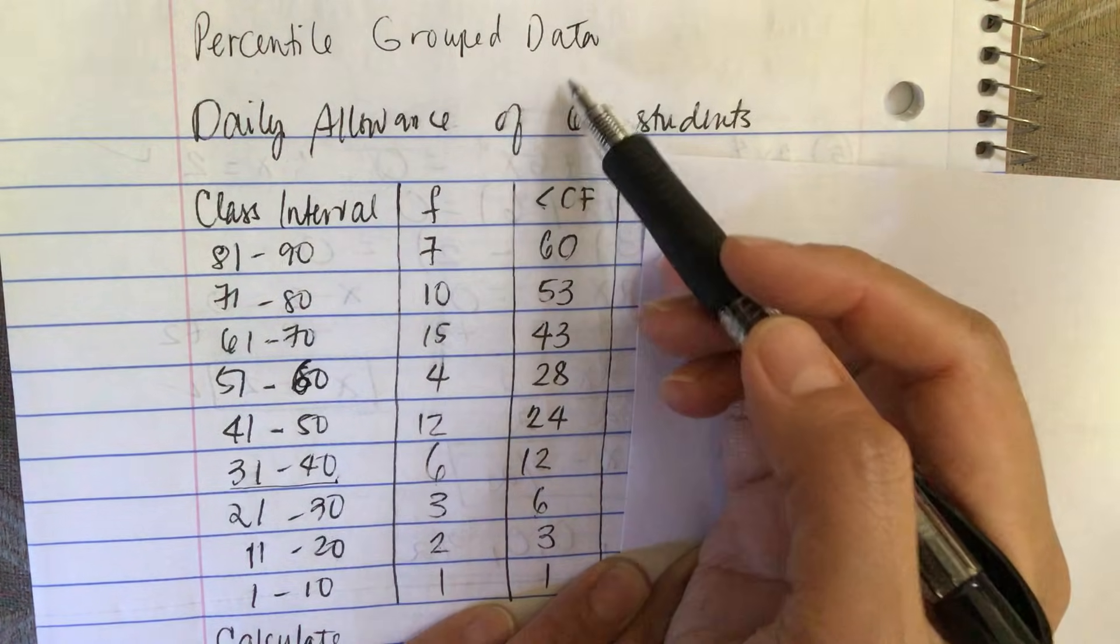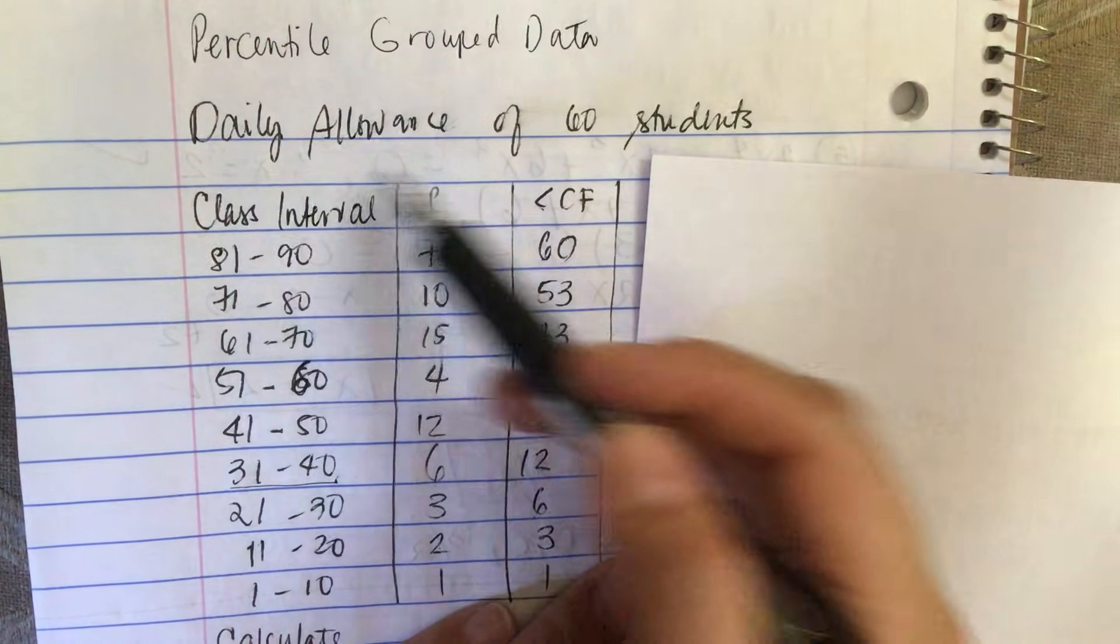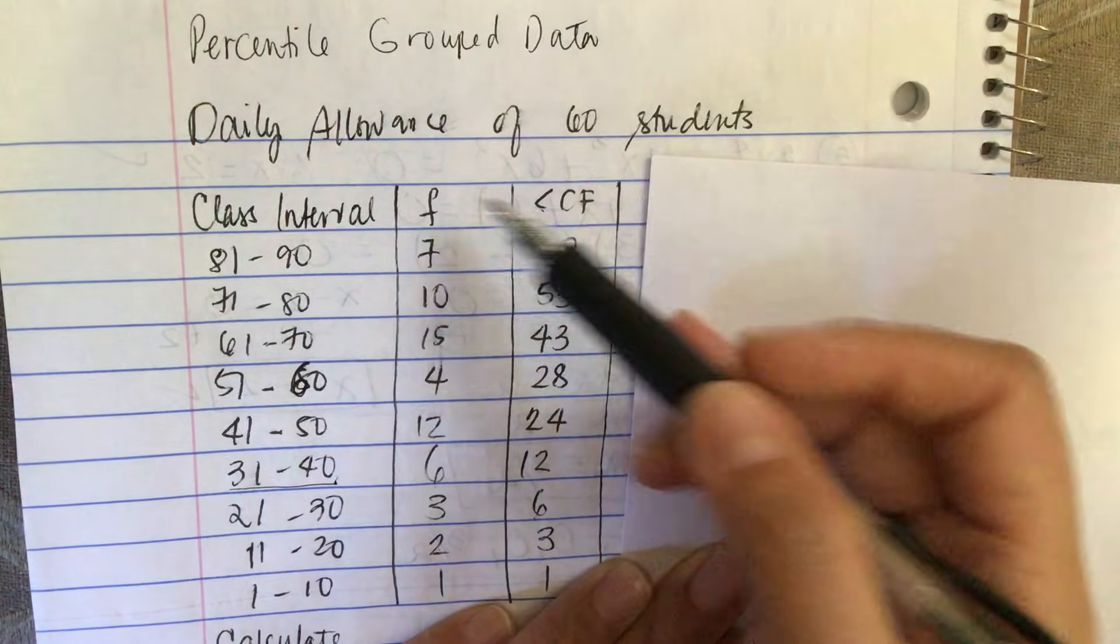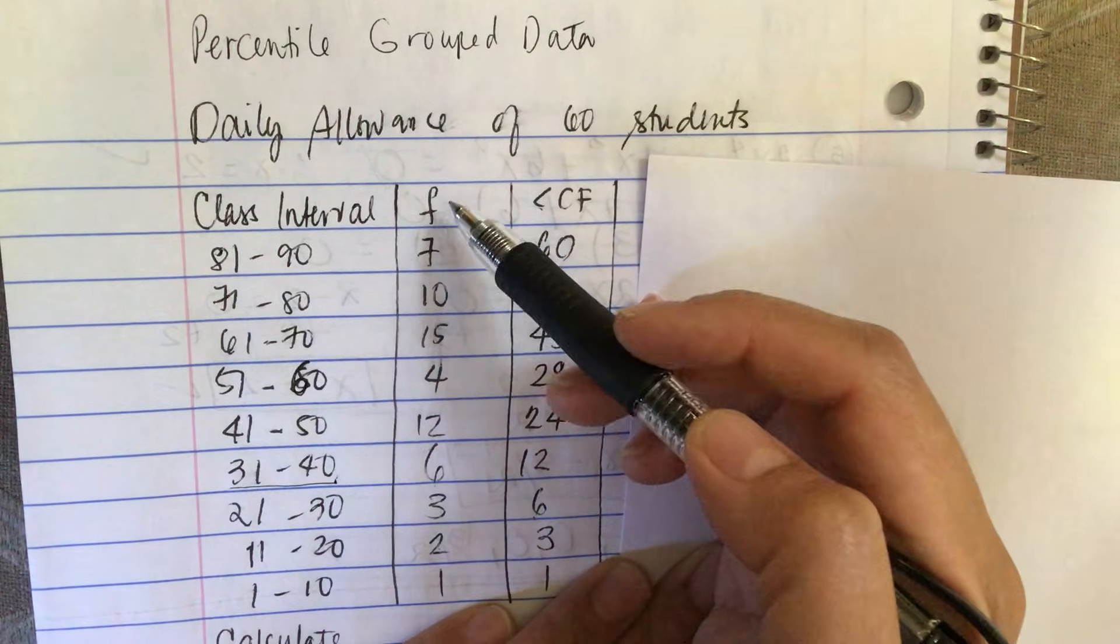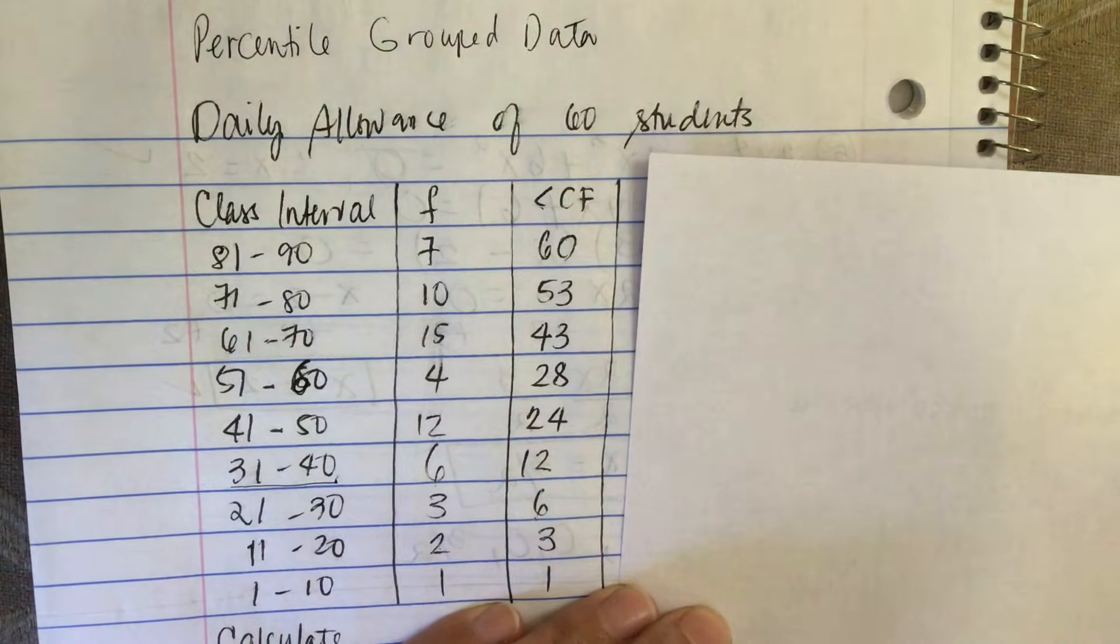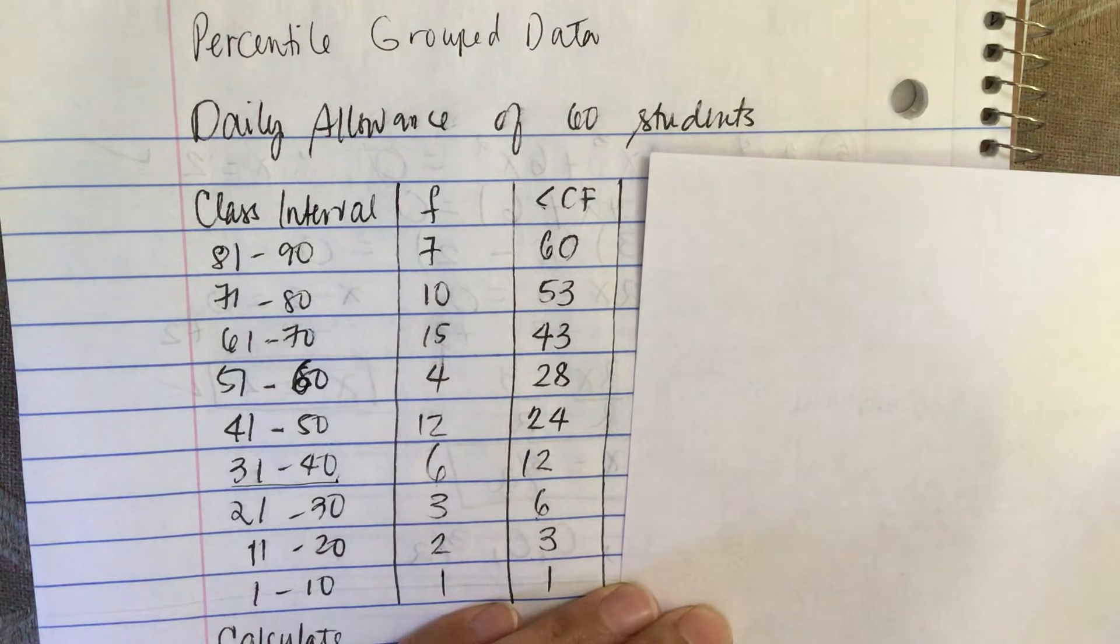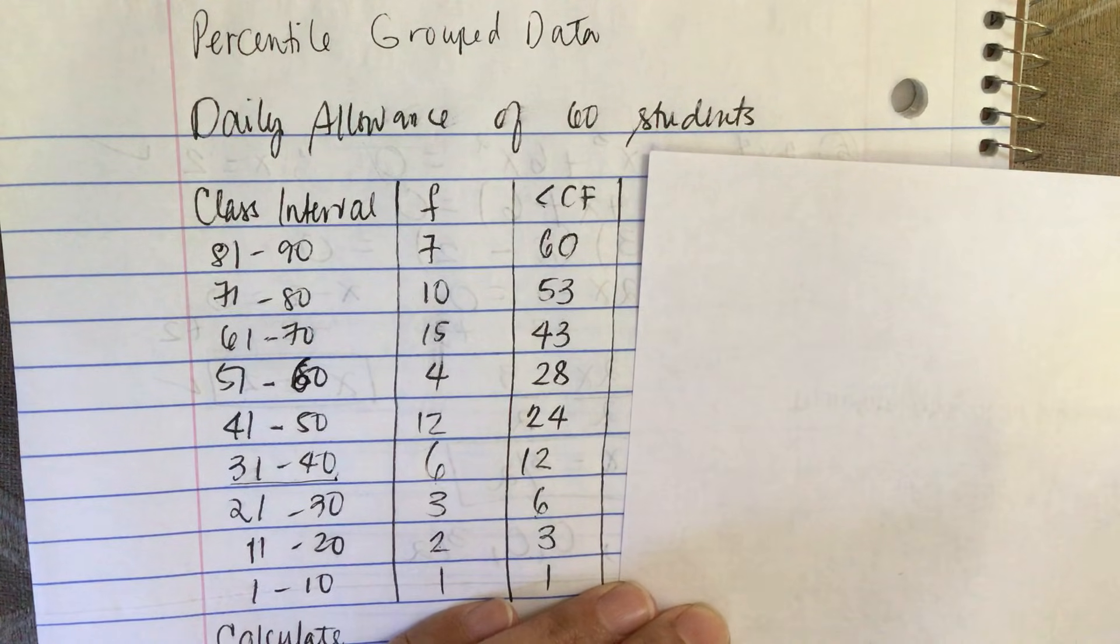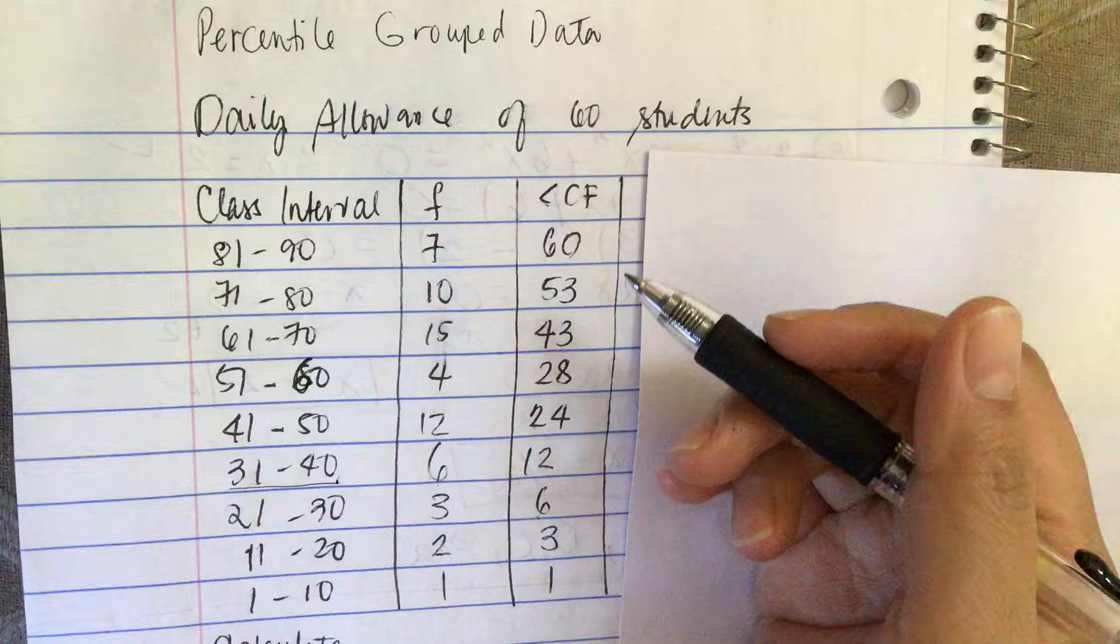We're going to do percentile for grouped data. This is the daily allowance of 60 students. They give us the class interval, the frequency, and the cumulative frequency. Now the formula...